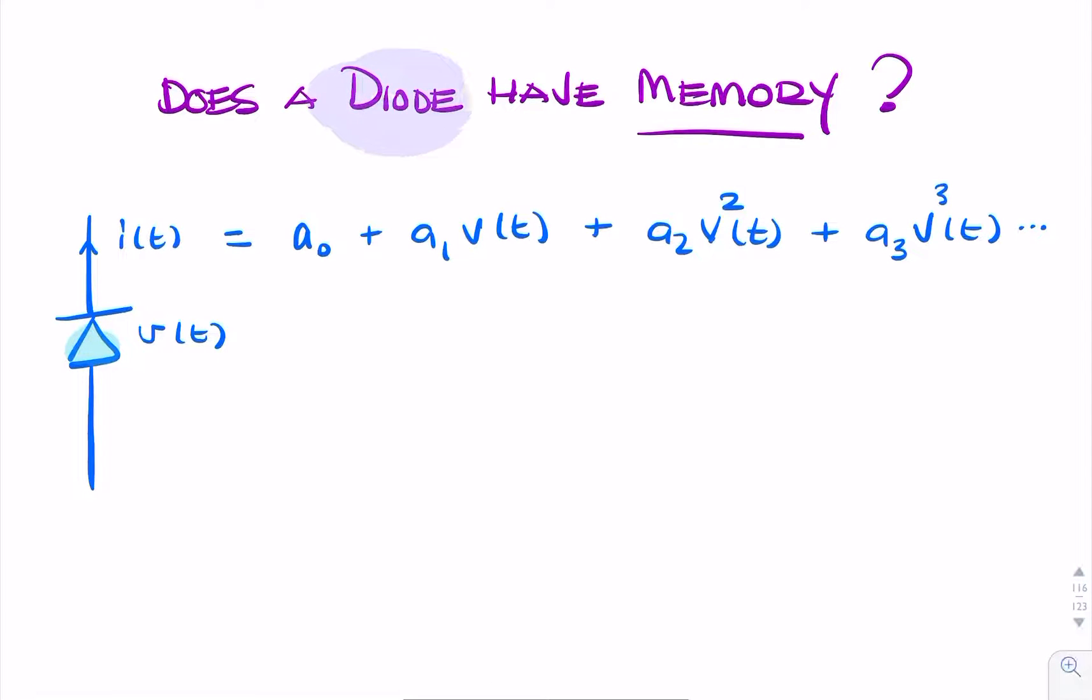This question is about a semiconductor diode, and we're asking whether or not it has memory. And we're told that there's a relationship between the current and the voltage, or the potential difference across the diode.